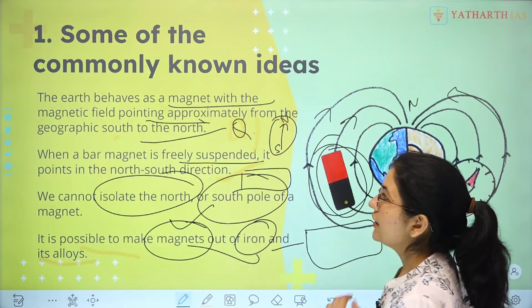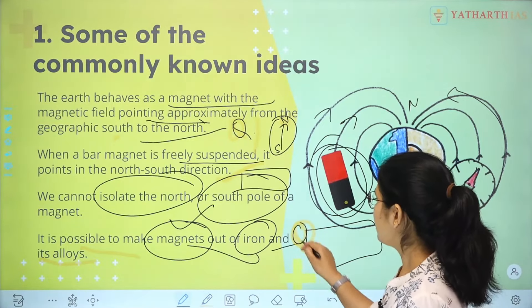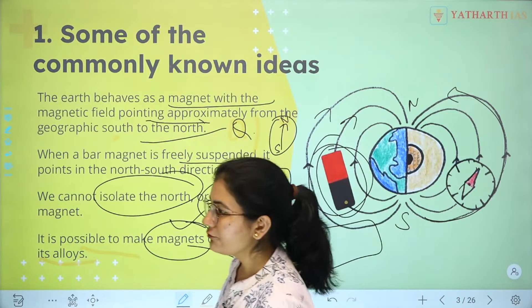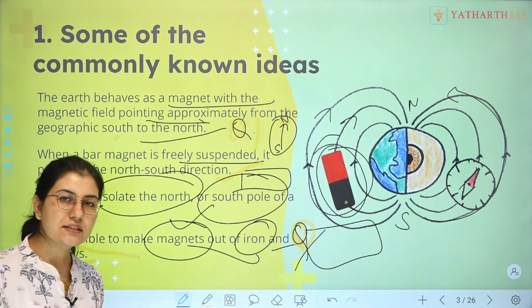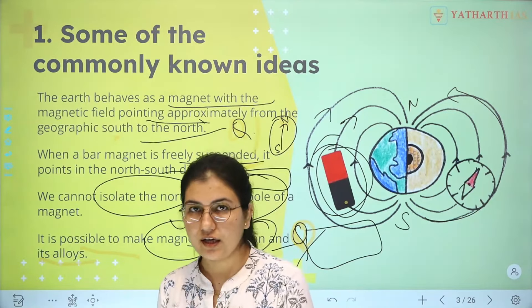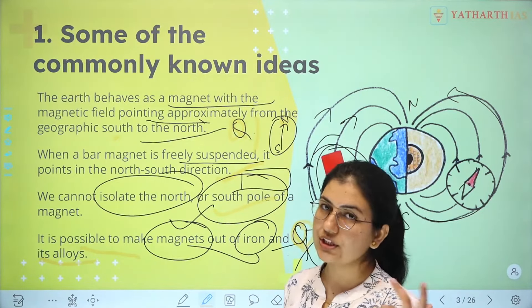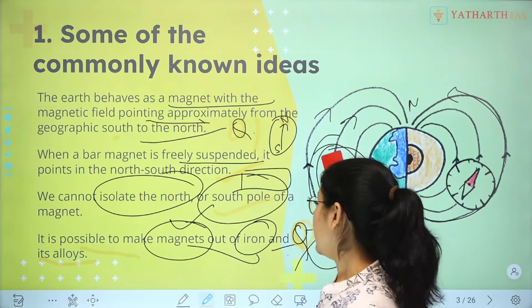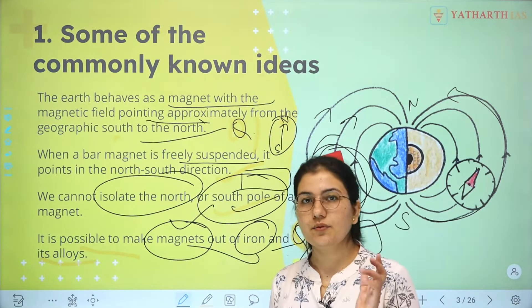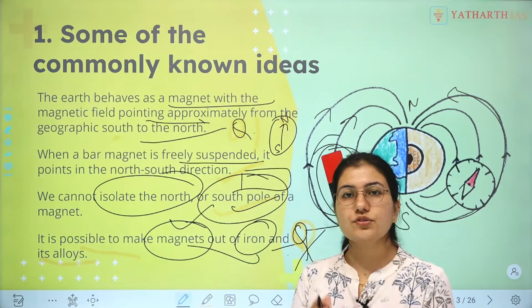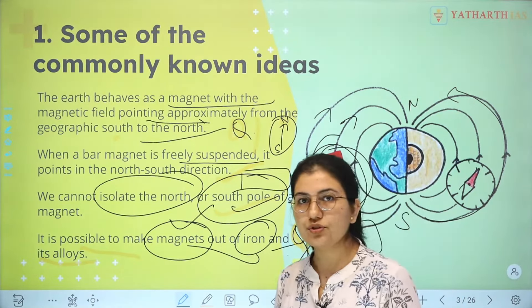These are the commonly known ideas. From here, potential exam questions include: artificial magnets can be created from iron, nickel, or cobalt — the answer is iron. The second question: can we isolate the north and south pole? No, we cannot isolate them. This can also appear as a property of magnets in mains examination.